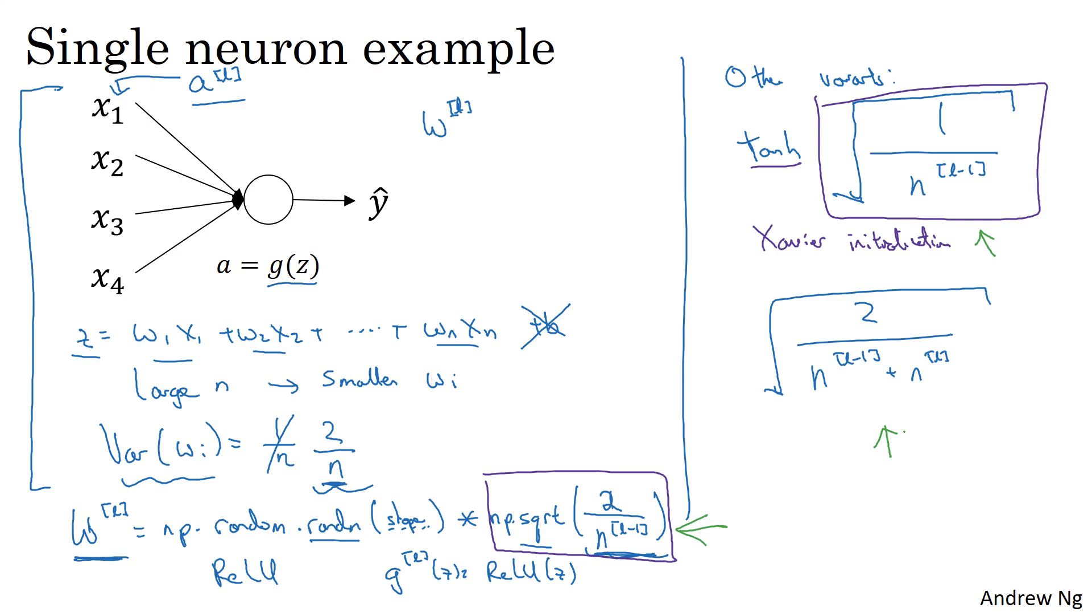If you wish, the variance here, this variance parameter, could be another thing that you could tune with your hyperparameters. So you could have another parameter that multiplies into this formula and tune that multiplier as part of your hyperparameter search. Sometimes tuning that hyperparameter has a modest size effect. It's not one of the first hyperparameters I would usually try to tune, but I've also seen some problems where tuning this helps a reasonable amount. But this is usually lower down for me in terms of how important it is relative to the other hyperparameters you could tune.